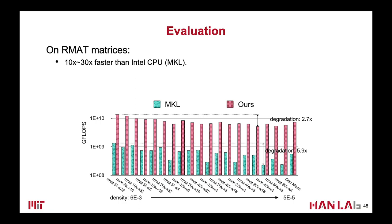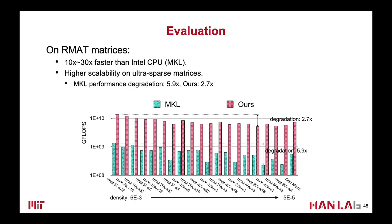We also evaluate the performance of our design on synthesized R-mat matrices to see the performance for different densities. Spark can on average achieve around 10 to 60x faster than the Intel CPU MKL library. Our design is also more stable and scalable as the matrix density goes down from 6×10⁻³ to 5×10⁻⁵. Compared to MKL, our performance degradation is smaller — MKL has a degradation of around 6x, while our design has only around 2.7x.